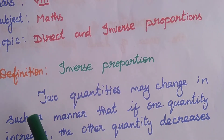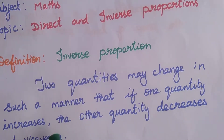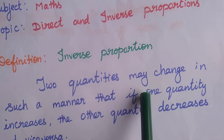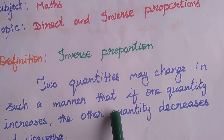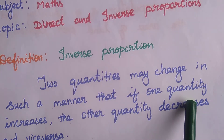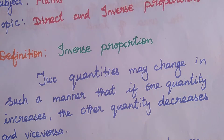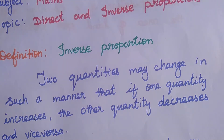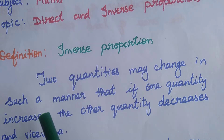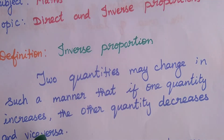First we will see the definition of inverse proportion. Two quantities may change in such a manner that if one quantity increases, the other quantity decreases, and vice versa. So two quantities we will consider — one may change in a manner that one quantity increases and the other quantity decreases.